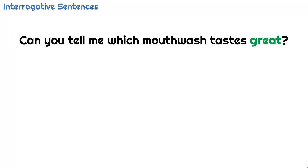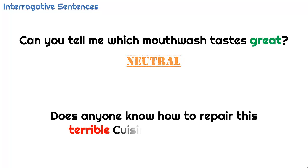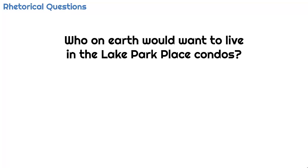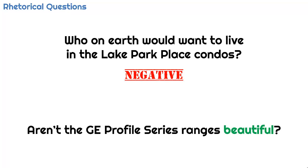Some interrogative sentences that contain sentiment words do not really express any sentiment. 'Can you tell me which mouthwash tastes great?' This is a neutral statement — even though it contains the positive word 'great,' it's not applied to any specific mouthwash. However, some interrogative sentences do express sentiment. 'Does anyone know how to repair this terrible Cuisinart smart stick?' Here is a negative sentiment sentence, even though it's in the form of a question. Many rhetorical questions are opinionated. 'Who on earth would want to live in the Lake Park Place condos?' — this is a negative statement. 'Aren't the GE Profile Series ranges beautiful?' — here's a positive statement in the form of a rhetorical question.